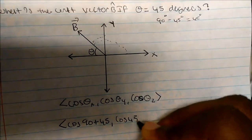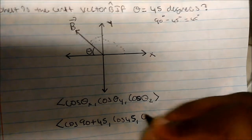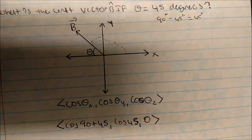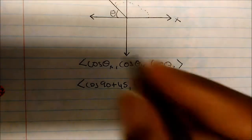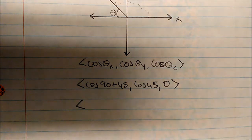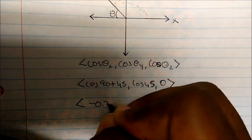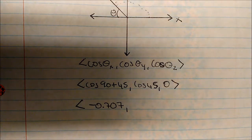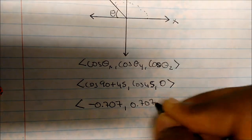So the y-direction is cosine of 45. The z-direction — that's not always zero, but the fact that we're in the x-y plane is the reason why our z value is zero. Cosine of 45 is square root of 2 over 2, which simplifies to 0.707. And cosine of 90 plus 45 is negative 0.707.